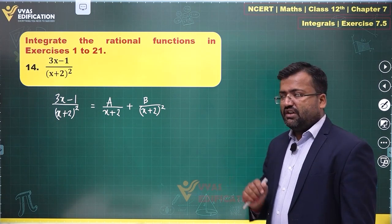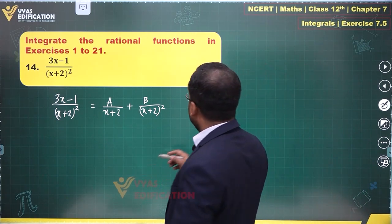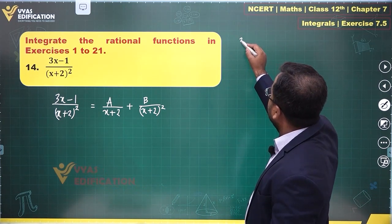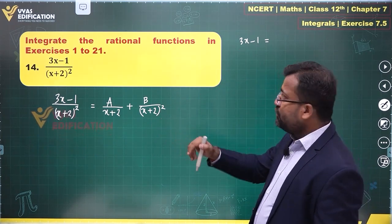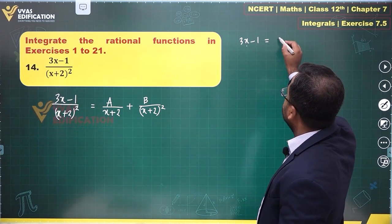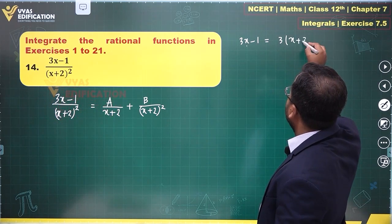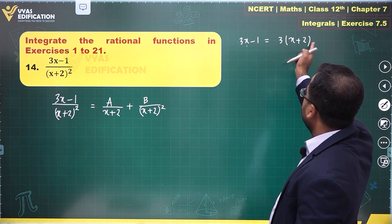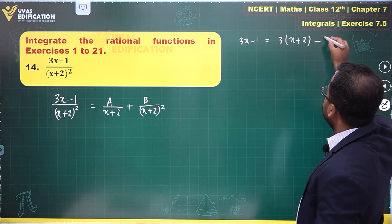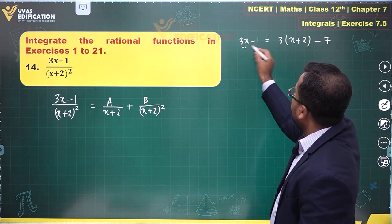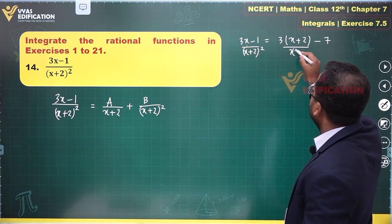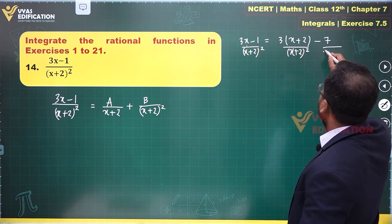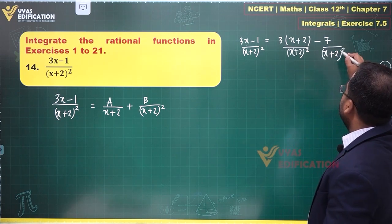By the way, this kind of question can be solved using a very easy approach. What is that? You can write 3x minus 1, try to convert this into x plus 2. So 3 times x plus 2 is what I get - 3x is taken care of, plus 6, and we have to go up till minus 1, so this will be minus 7.